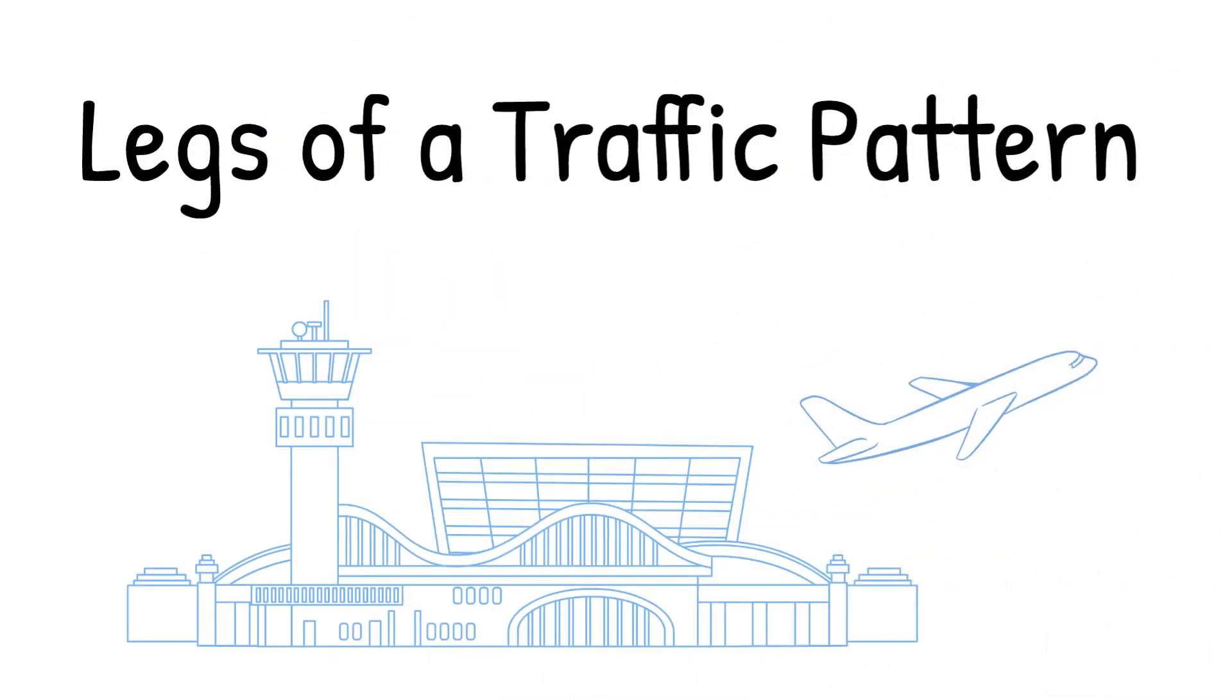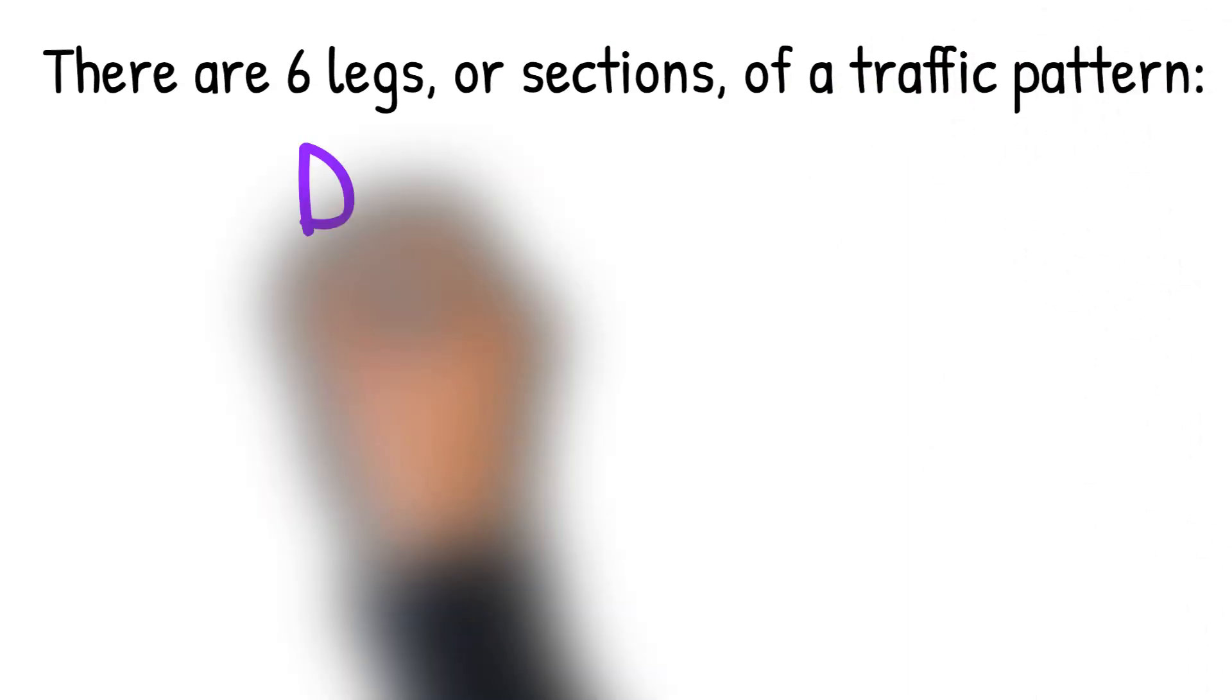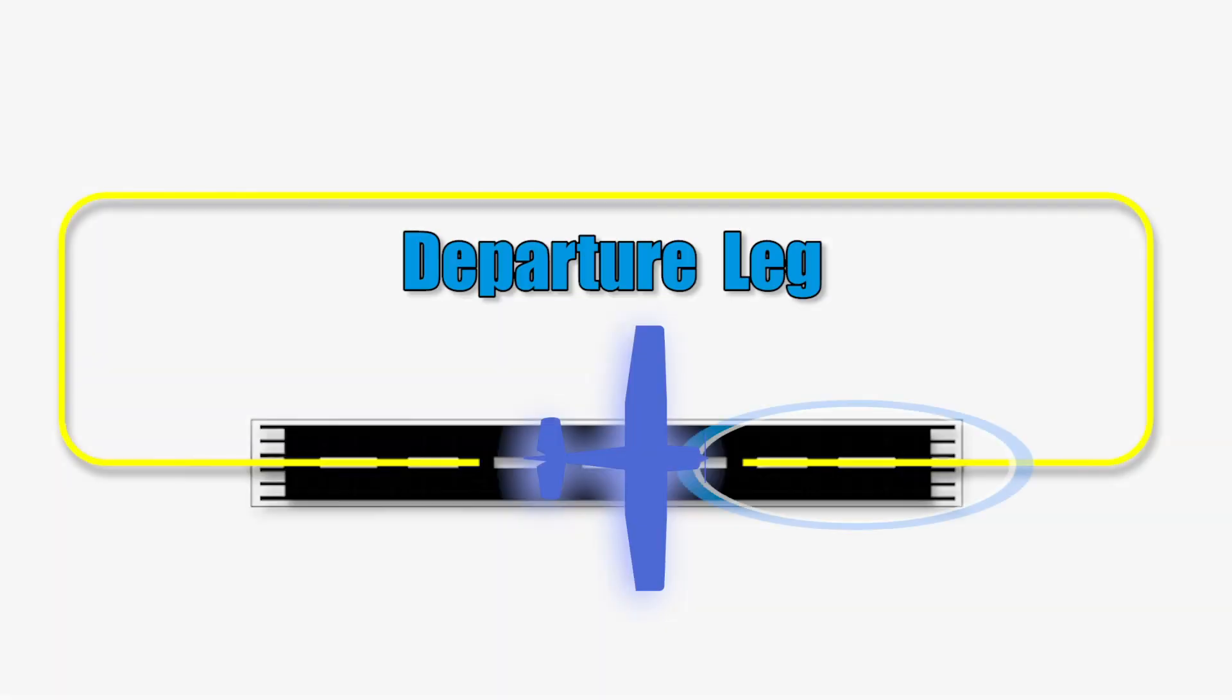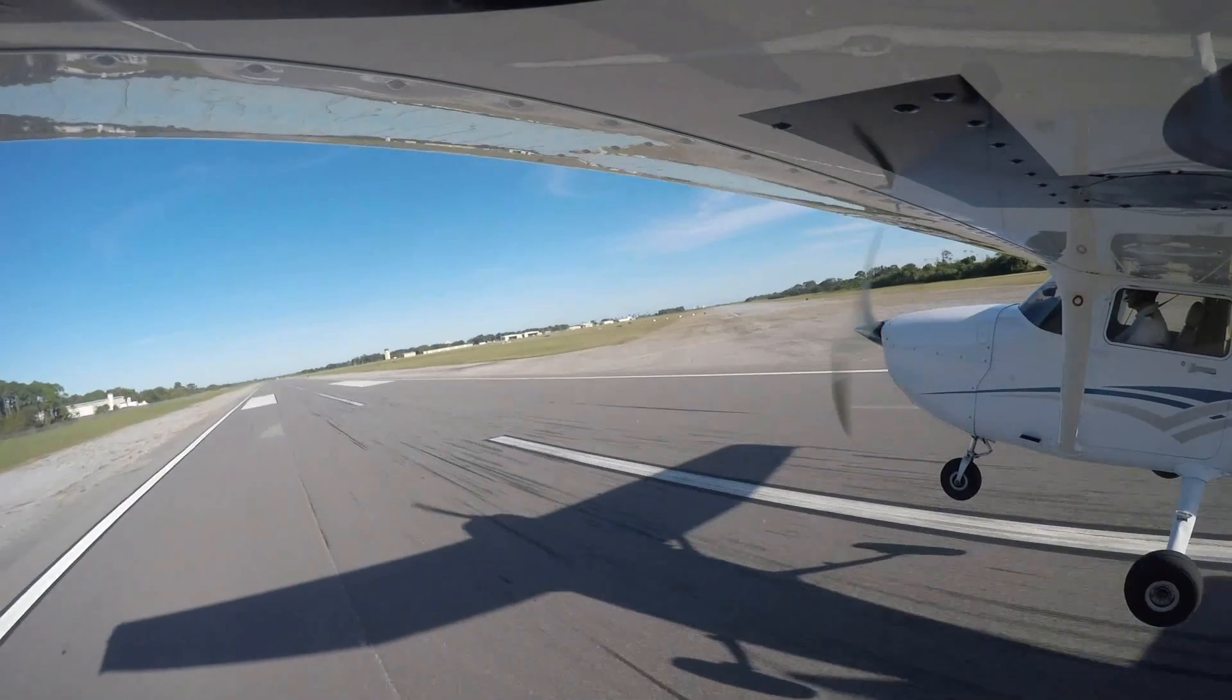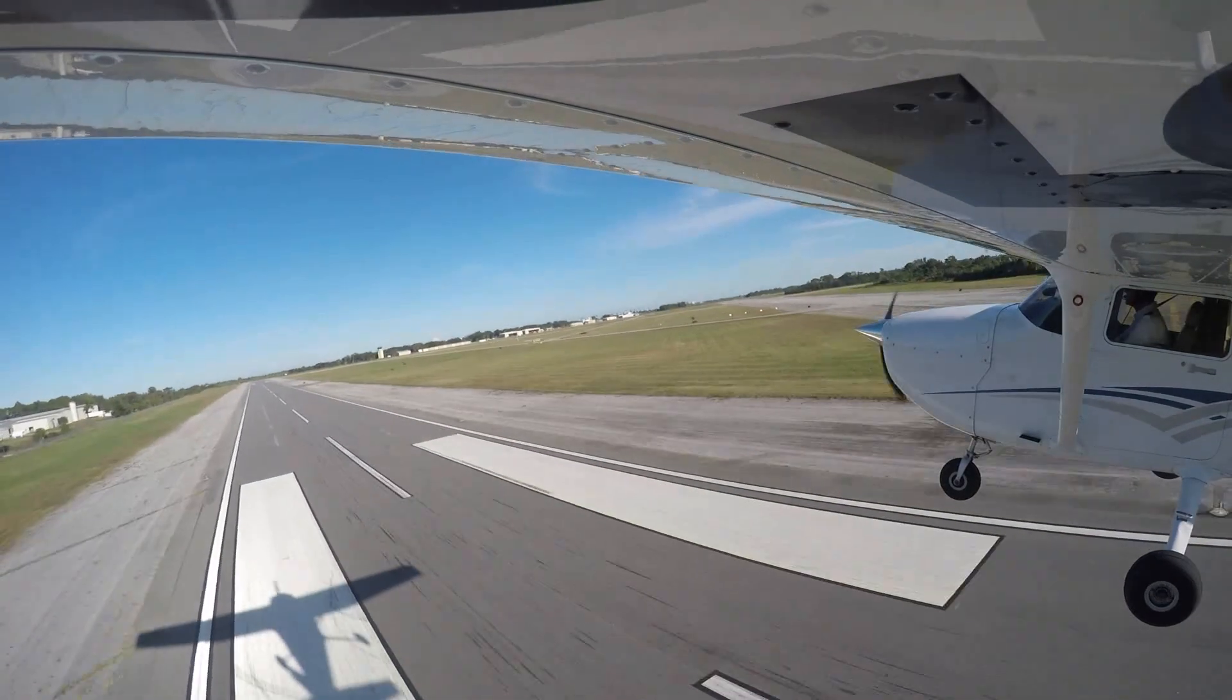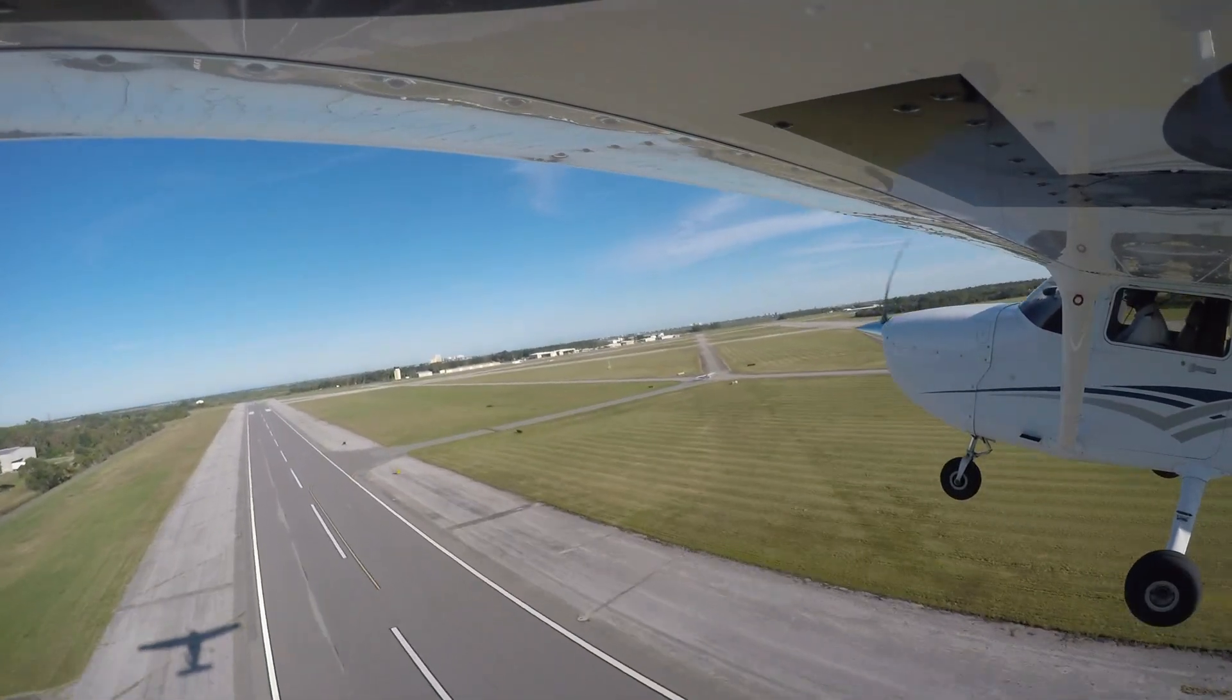Legs of a Traffic Pattern. There are six legs, or sections, of a traffic pattern. The departure leg of the traffic pattern is a straight course aligned with, and leading from, the takeoff runway. This leg begins at the point the airplane leaves the ground and continues until the pilot begins the 90 degree turn onto the crosswind leg.